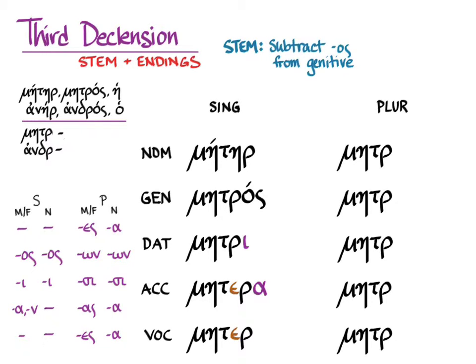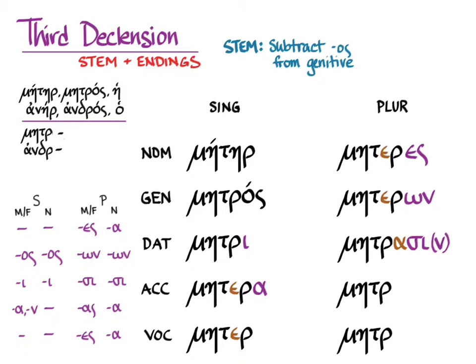The same thing happens with the vocative: we use simply the stem of the short vowel grade as the vocative. In the nominative plural and genitive plural, we also get the short vowel grade. In the dative plural, what you would expect is unpronounceable, so Greek adds an alpha for extra pronounceability. Then we continue with the short vowel grade in the accusative plural and the vocative plural.